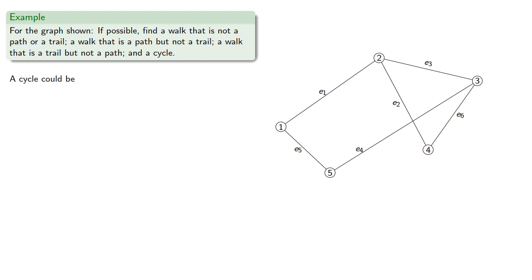The cycle gets us back to our starting point without revisiting any vertices, so we might go from 1 to 2 to 3 to 5 back to 1.